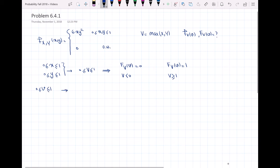From the definition of the CDF, the CDF of V is the probability of V being less than or equal to some value v. This can be written as the probability that the maximum of X and Y is less than or equal to v.